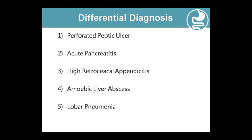Differential diagnoses include perforated peptic ulcer, where perforation is so severe it becomes a straight perforation. Acute pancreatitis can present similarly, as can inflammation of the pancreatic structure. High retrocecal appendicitis — inflammation of the appendix — should be considered. Amoebic liver abscess and lobar pneumonia are also differentials due to their effects on the liver and right side.